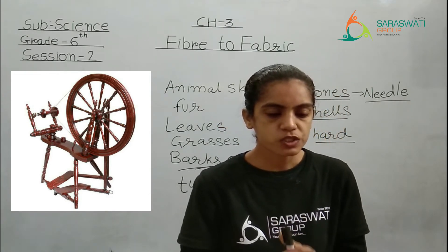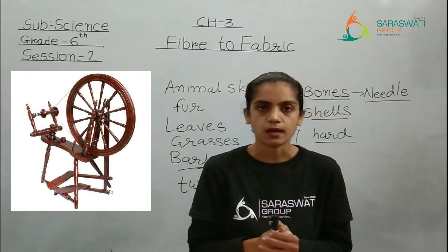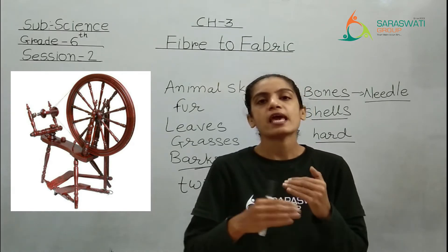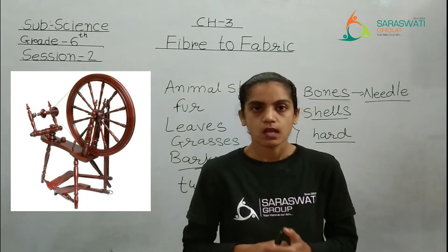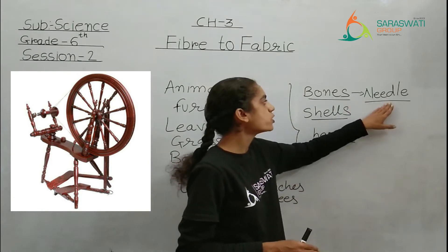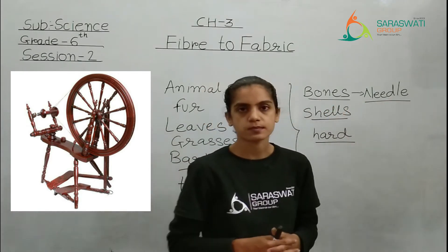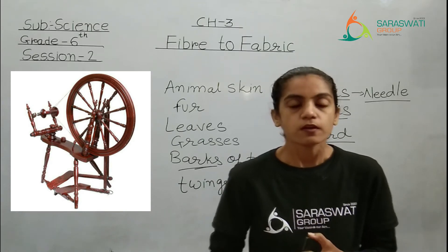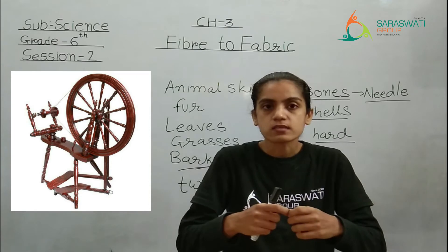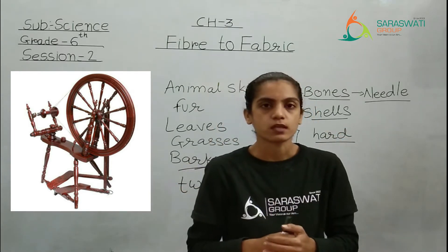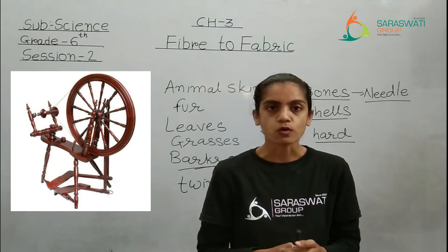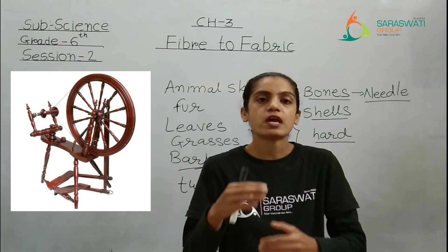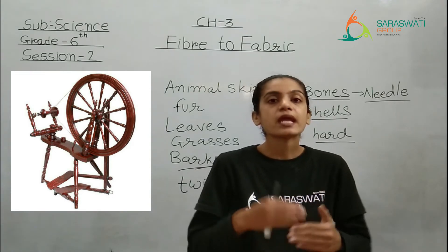Nearly all clothes were hand sewn after the invention of the spinning wheel — they started converting strands into fabric and stitching it with their hands, using needles made from animal bones. Just imagine doing it by hand versus with the help of a machine — of course in a machine it goes much faster. So after the invention of the spinning wheel, the stitching of clothes became much easier and made their life much easier.